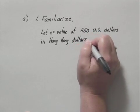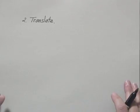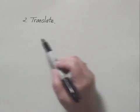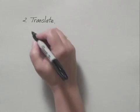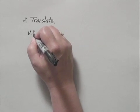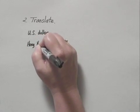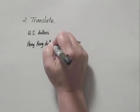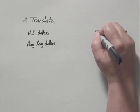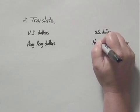In step two, translate, we'll be translating to a proportion and solving using proportions. The key to proportions when you translate is to get the same unit in the numerator on both sides and the same unit in the denominator. We're comparing U.S. dollars to Hong Kong dollars, so we write U.S. dollars in the numerator and Hong Kong dollars in the denominator on both sides.